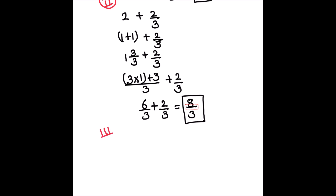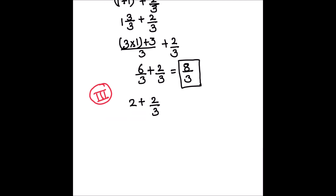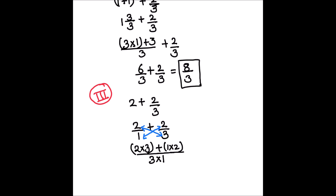There is one more method, which is the third method. Our question is 2 plus 2 thirds, and we write 2 as a fraction: 2 upon 1 plus 2 by 3. In the third method, our denominator will be the product of both denominators, which is 3 times 1. The first term in the numerator is the product 3 times 2, and the second term is the product 1 times 2. So we get 2 times 3 plus 1 times 2 — just cross multiply the numerators and denominators. This comes out to be 6 plus 2 divided by 3, which equals 8 by 3.